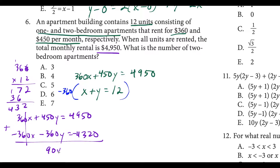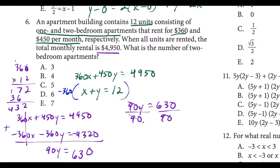Adding those equations leaves us with 90y. When we subtract: 5 minus 2 is 3, 9 minus 3 is 6, so 90y equals 630. Dividing both sides by 90 gives y equals 63 divided by 9, which is 7. So there are seven two-bedroom apartments in this building.